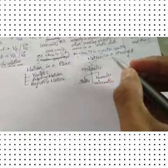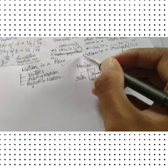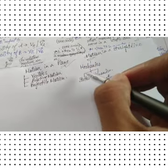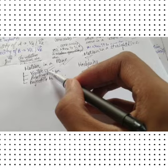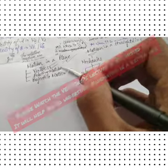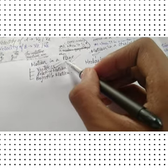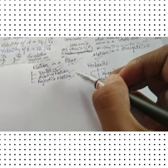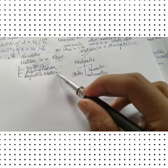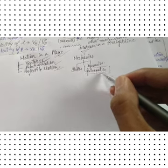Hello everyone, today we will be starting the second chapter. We completed motion in a straight line, and now we will be doing motion in a plane, which is the second part of kinematics. Most of motion in a plane involves vectors, so please go watch the vectors lecture first. After vectors, we have relative motion, then projectile motion, and then we'll be done with kinematics.